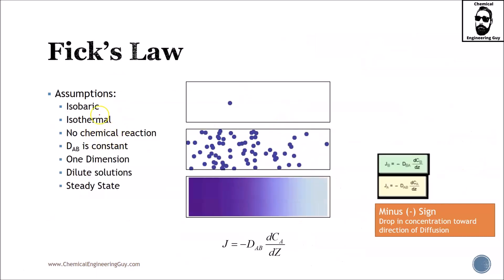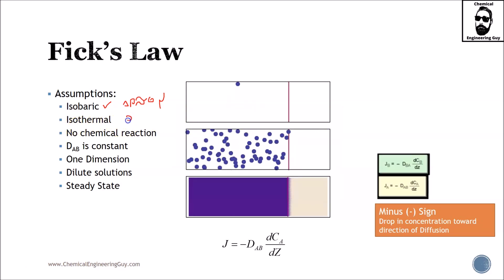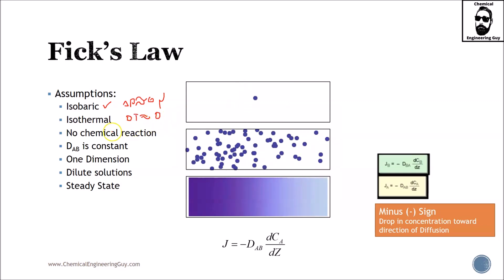And the assumptions of Fick's Law or Fick's model is first things first: it's isobaric. So the change in pressure is near to zero. You should not expect large viscosity changes, even though you will have them because concentration is changing. Isothermal meaning that the change in temperature is also zero. We have it at a fixed temperature.